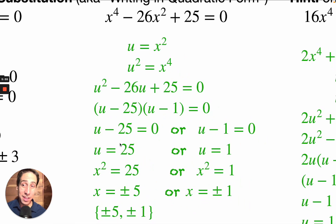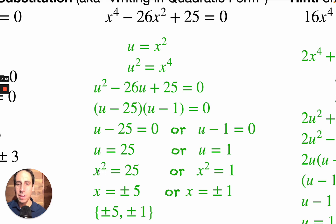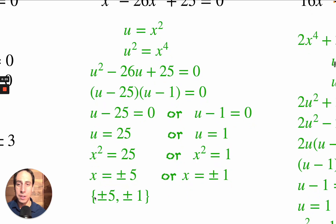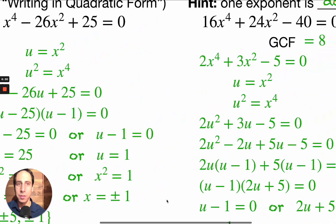Now back-substitute — we started with x's and must end with x's. U equals 25 becomes x squared equals 25, and since u equals x squared, take the square root of both sides to get x equals plus or minus 5. Same for u equals 1: x squared equals 1, giving x equals plus or minus 1. All four solutions are written in the solution set: plus or minus 5 and plus or minus 1.